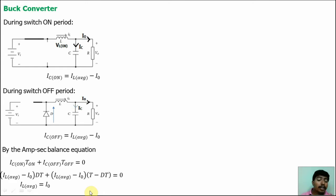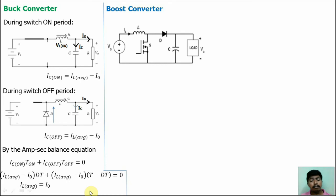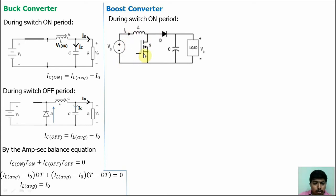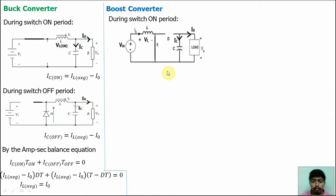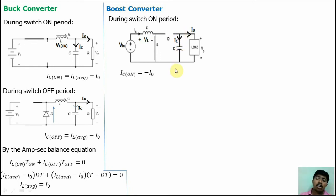Now we will discuss the average current flow through the inductor for the boost converter. Remember the circuit for the boost converter. During on time, when the switch is on — closed, short circuit — all the current flows towards the short circuit path. There is no current flowing towards the anode, because this point voltage will be 0, so the diode becomes reverse bias. The equivalent circuit has the switch closed and the diode open. Applying KCL at the junction, we get Ic_on = −I0.